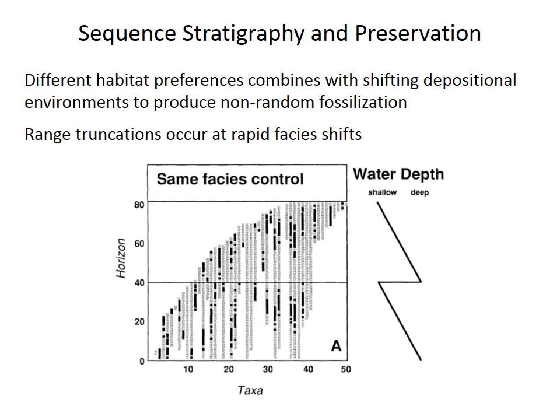That combination of species-specific habitat and depth preferences with cyclical changes in depositional environment produces non-random fossilization. In the model illustrated at the bottom, some species have preferred depths in deeper facies and others in shallow facies, while water depth changes cyclically. The rapid transition from shallow to deep facies at horizon 40 produces range truncations where shallow-water species are not found in deep-water facies, even though they should still have been present somewhere. Similarly, observed first appearances of shallow-water species will be biased if the section was represented by deep-water facies when that species truly appeared.